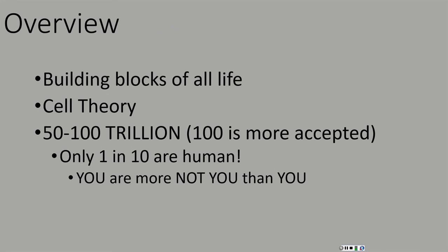Let's begin by talking generally about cells. We've mentioned them back in Chapter 1 — we said that they were the smallest unit of organization where something is considered alive. To build on that, we're going to talk about something called the cell theory. Cell theory says a few things. First, it says that cells compose all living things. All living things are composed of cells; cells are the building block of all life.